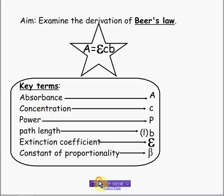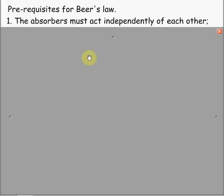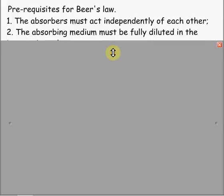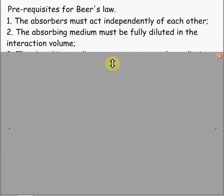Some prerequisites for Beer's Law. Number one, the absorbers must act independently of each other. Two, the absorbing medium must be fully diluted in the interactive volume — it must be fully diluted, it must be a solution.